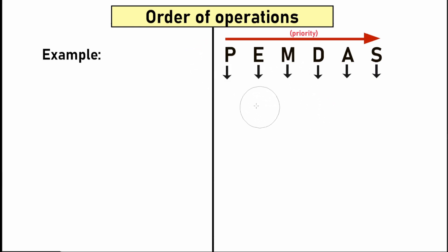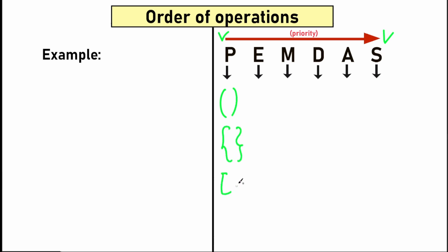The left side has the highest priority and the right side the lowest. The letter P stands for parentheses — these round brackets, squiggly brackets, and other types of brackets depending on your country. Each type of parentheses is valid.